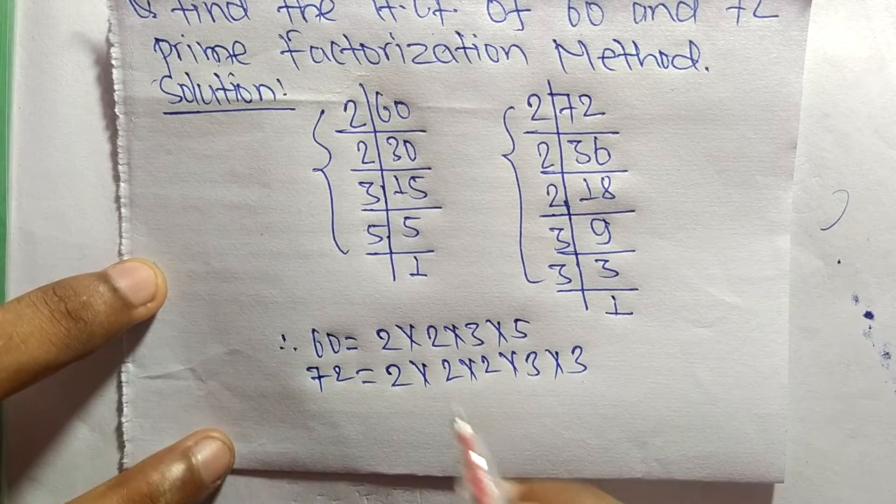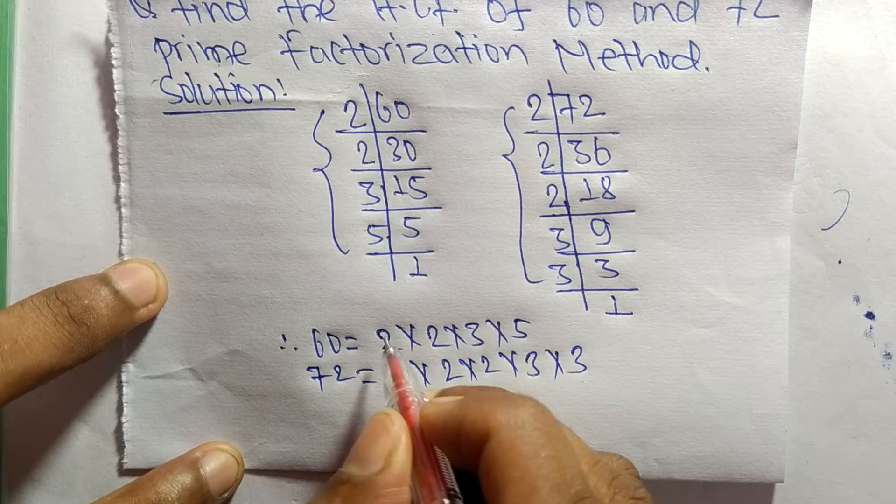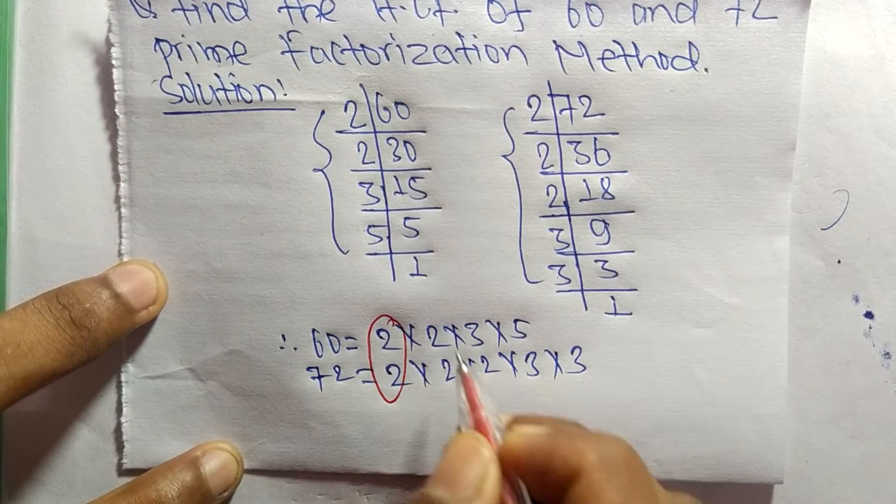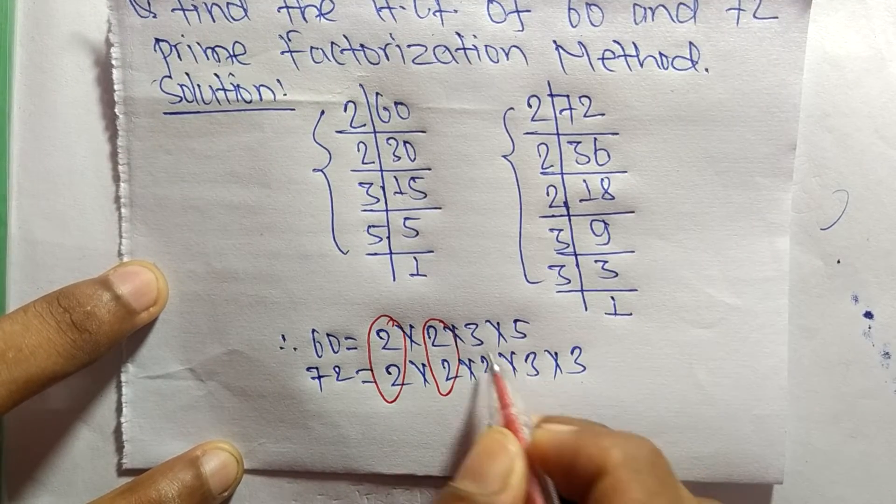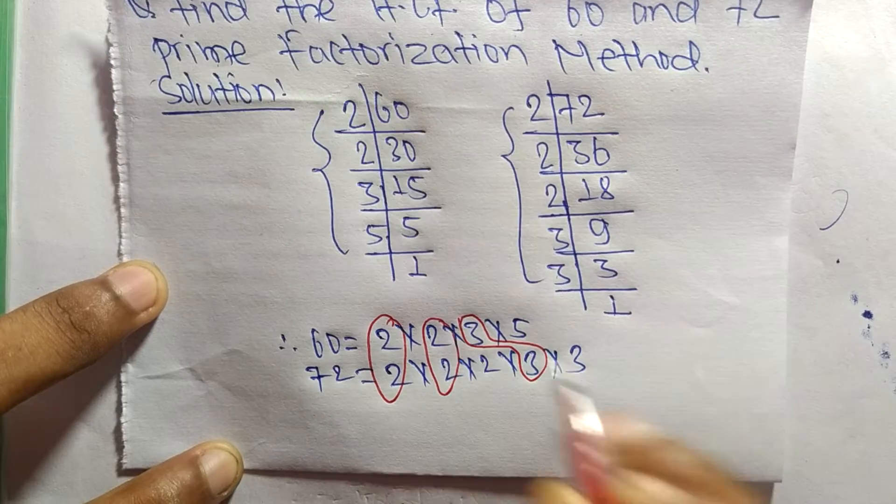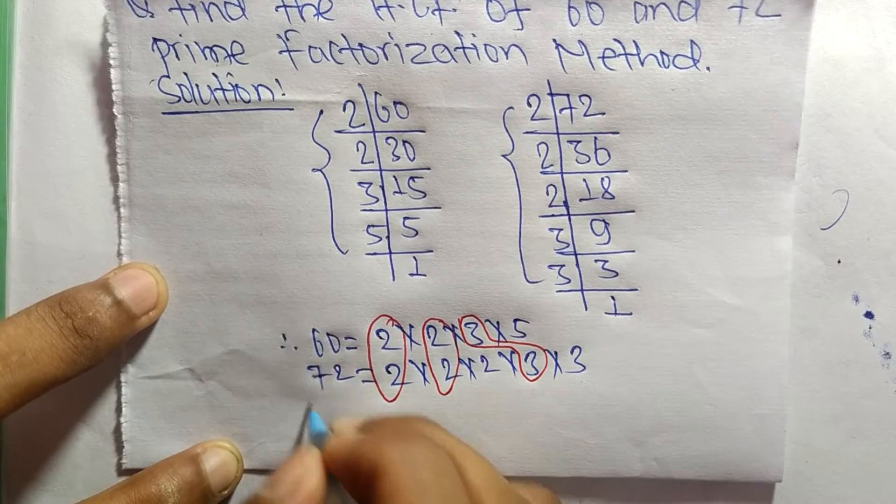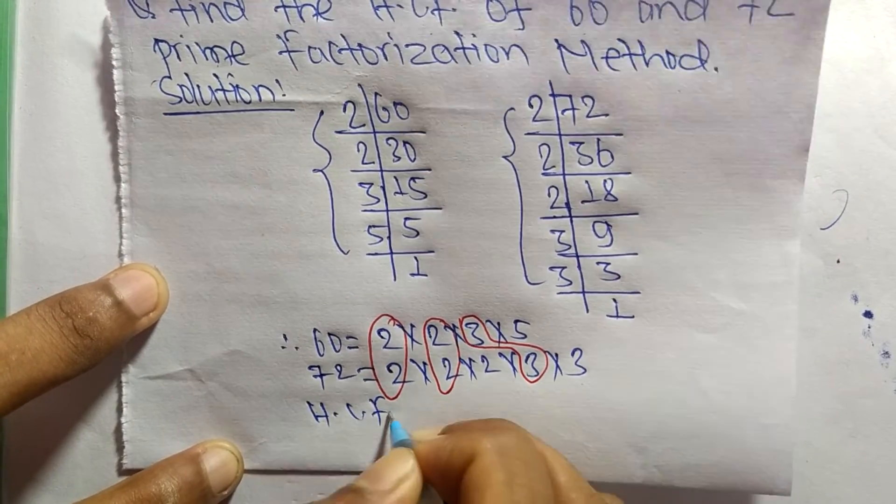So now we select the common factors in this prime factorization. The common factors here are 2, 2, and 3. So the HCF is equal to the product of common factors which are 2, 2, and 3.